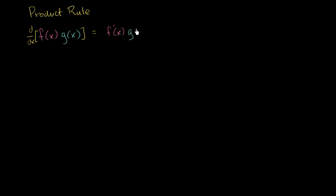Times the second function, plus the first function, not taking its derivative, times the derivative of the second function. So here we have two terms. In each term, we took the derivative of one of the functions and not the other. We multiplied the derivative of the first function times the second function, plus just the first function times the derivative of the second function.